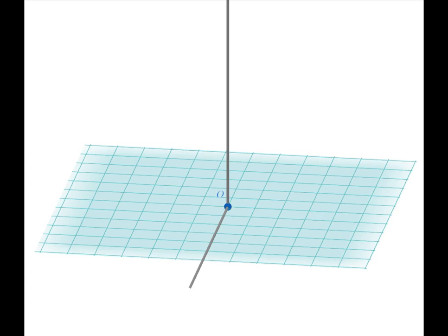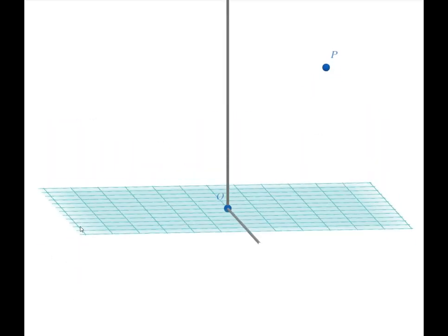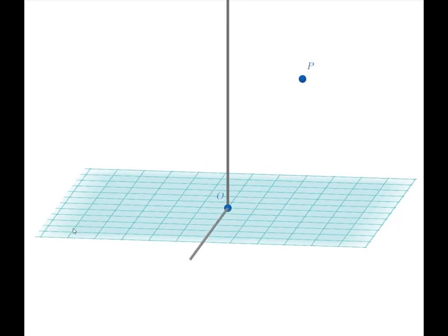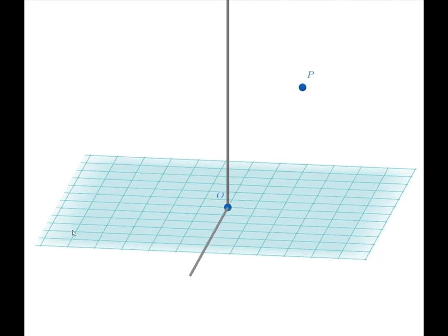So now if we want to keep track of a point P in our space, we locate the point out here in space someplace. And you can see kind of as we twirl around here that it's hanging out there in space. So how do we locate this point with a set of coordinates?